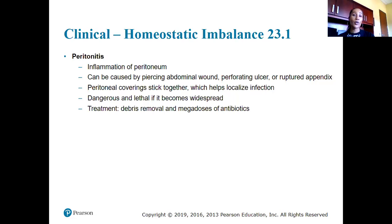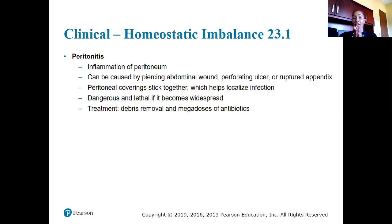A complication that can occur with the peritoneal cavity is peritonitis — inflammation of the peritoneum — which can be caused by piercing the abdominal wall, a perforating ulcer, or a ruptured appendix. This can be fatal because the peritoneal coverings stick together, trapping bacteria or foreign substances, localizing but allowing infection to grow and fester. Treatment involves removing the debris and giving high doses of antibiotics.